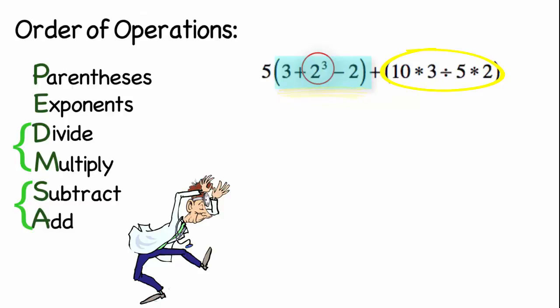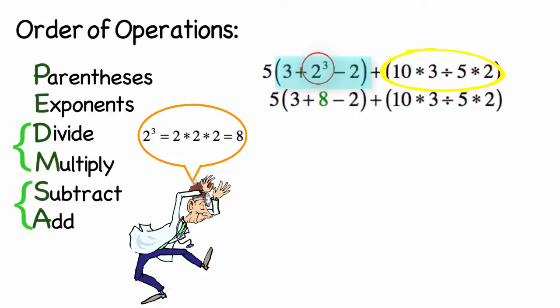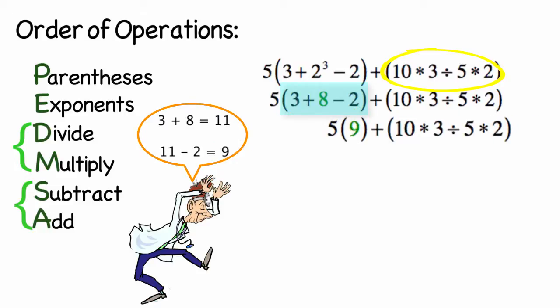3 plus 2 to the third minus 2. Well, we'd first simplify the exponent. So 2 to the third becomes 8. Then we would subtract and add from left to right, giving us a total of 9.